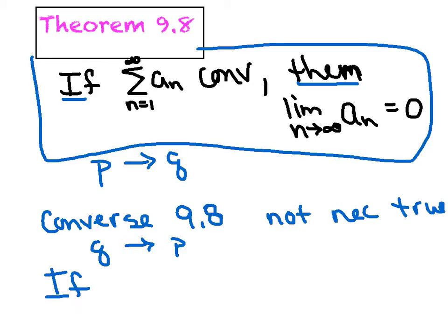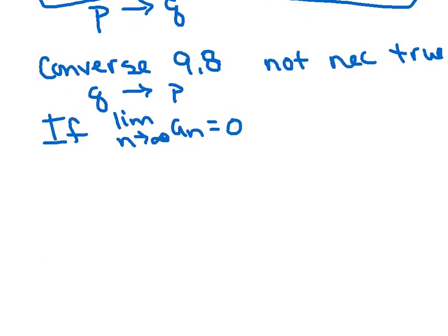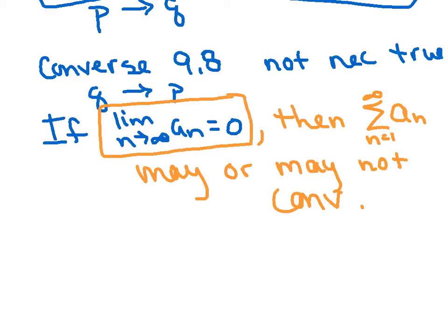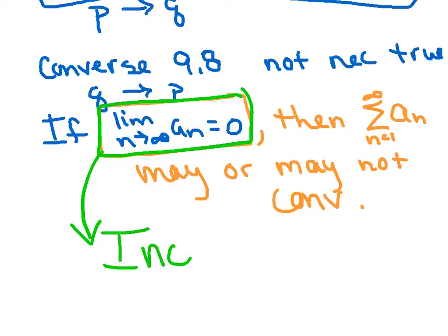If you knew that the limit of a sub n equals zero, believe it or not, that does not guarantee convergence — the series may or may not converge. That's going to be one of the biggest things we fight all year. There will be many moments where you prove the limit equals zero and you'll be tempted to say the series definitely converges, but we cannot say that. Whenever you get this case, get in the habit of saying to yourself: inconclusive. It might converge, it might not — I don't know for sure, I have to move on and try another test.